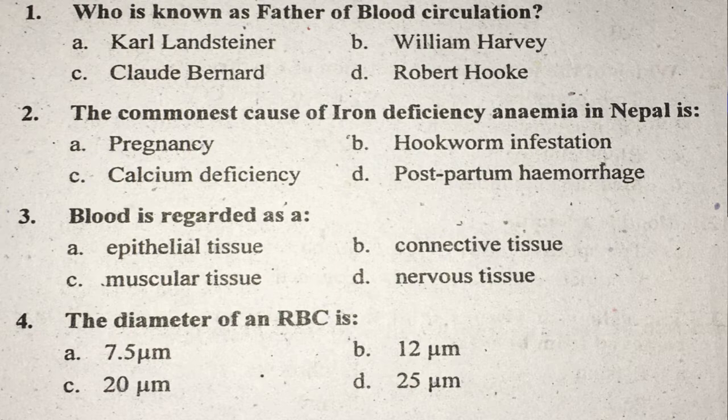The same question: Blood is regarded as what type of tissue? Blood is regarded as a connective tissue. The correct answer is B — connective tissue.